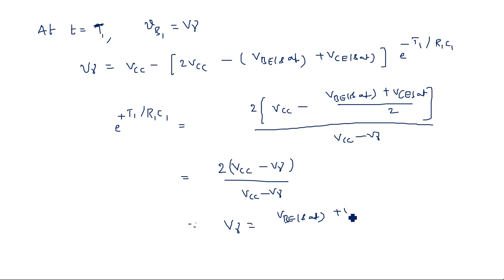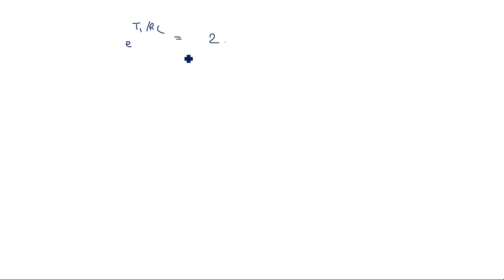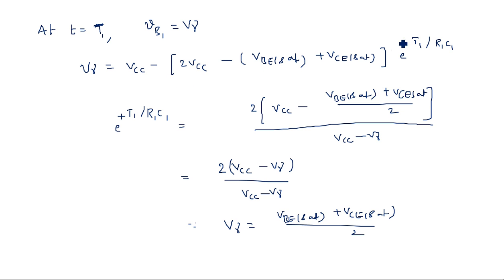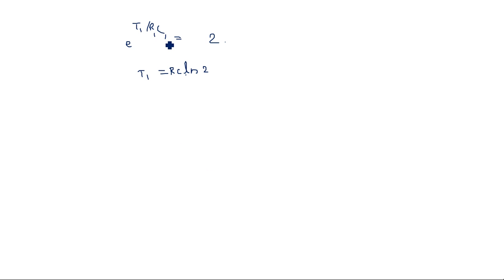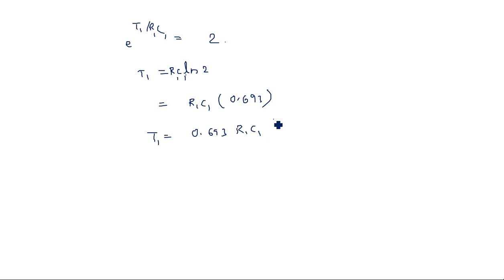Taking the natural log: T1/R1C1 = ln 2, so T1 = R1·C1·ln 2 = 0.693·R1·C1. This is the time for the first half-cycle. Similarly, we can calculate VB2 for the interval T1 < t < T2, and by the same procedure T2 = 0.693·R2·C2.